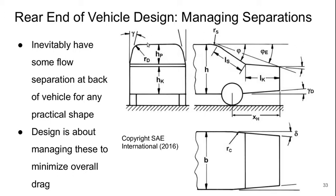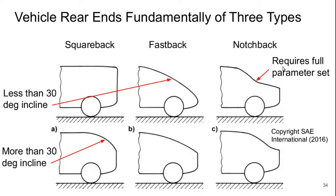There are all kinds of things we can do: we can taper the side angles of the rear window, add radii, control the trunk length and angles, add a boat tail which is the tapering of the vehicle at the rear, or bring the bottom of the vehicle up. There are a large number of geometric parameters at play. To make this more manageable, we're going to fundamentally categorize any vehicle rear end into one of three types: either a square back, fast back, or notch back.